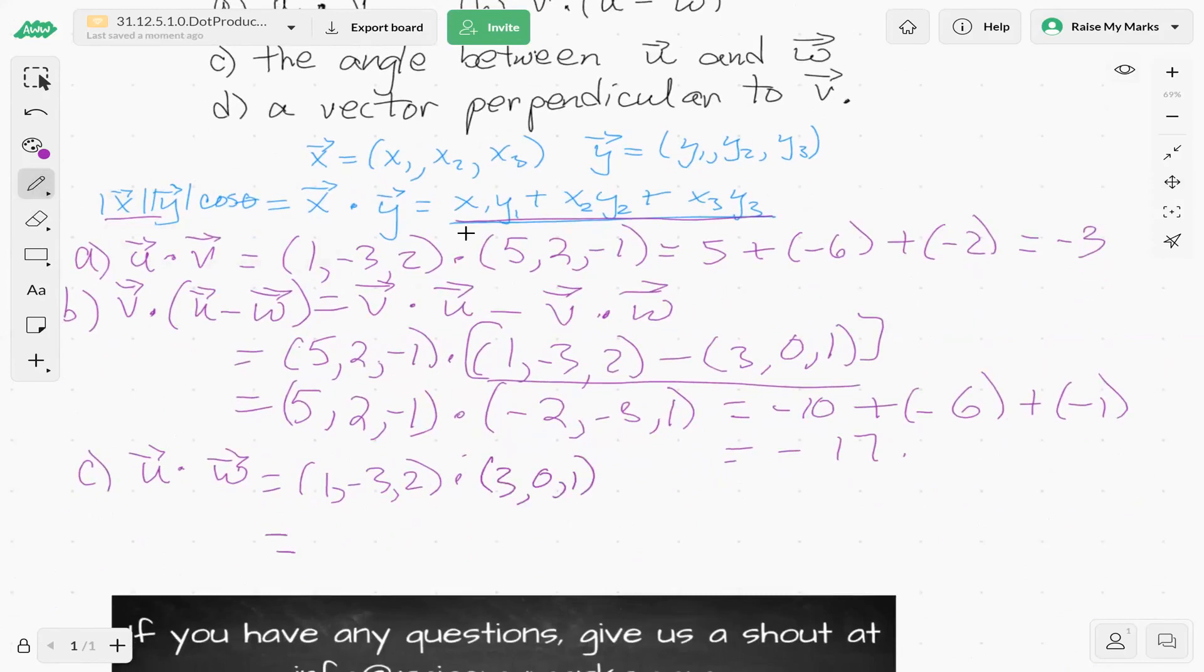And what is that dot product? We got 3 plus 0 plus 2. Okay, we've got 5. Excellent.